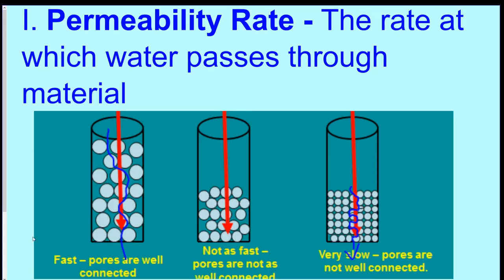The permeability rate is the rate or speed at which the water passes through the material. The bigger the space is, like in this picture, the faster it will seep through. The smaller the space, like over here, the slower it will seep through because it has to navigate around all these little tight corners and particles. This one, it just can go a direct route down.